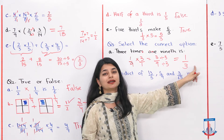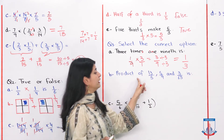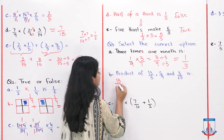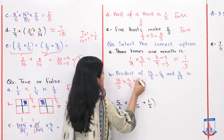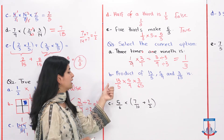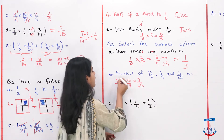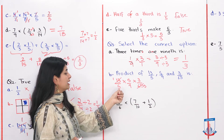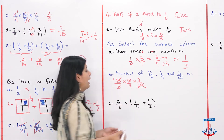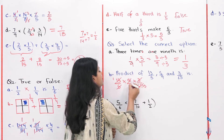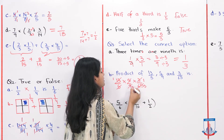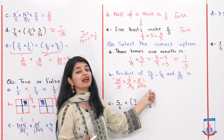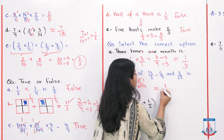The next question is the product of 13 over 5, 5 over 9, and 3 over 65. We multiply these: 13 over 5 into 5 over 9 into 3 over 65. I can see that 13 and 65 cancel — dividing both by 13 leaves 1 and 5. Then 5 and 5 also cancel. And 3 and 9 divide by 3, leaving 1 and 3. So we have 1 into 1 into 1 on top, which is 1, and 3 into 5 on the bottom, which is 15. The answer is 1 by 15.